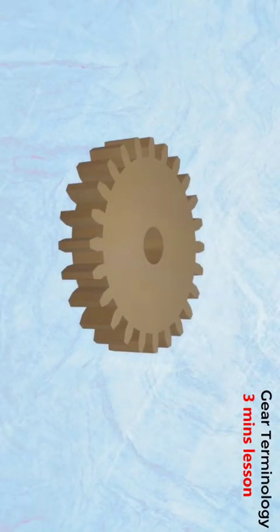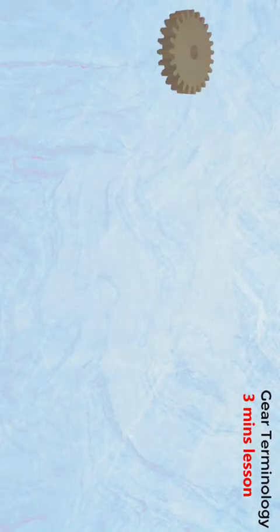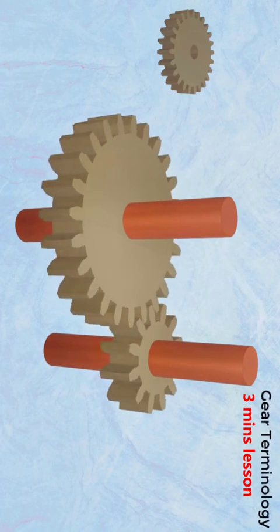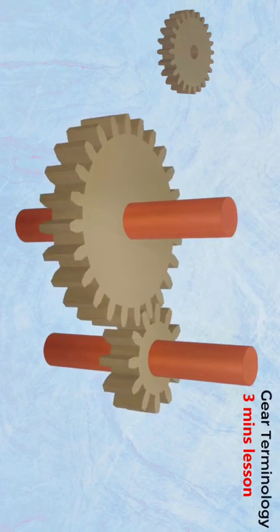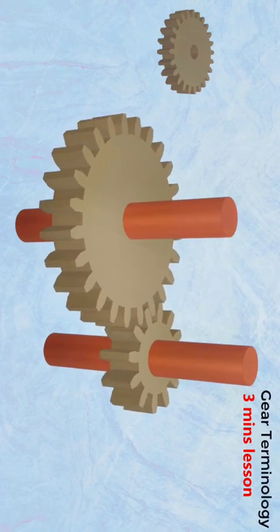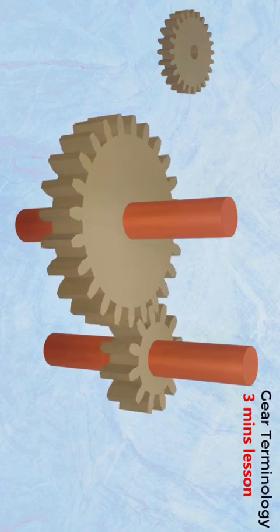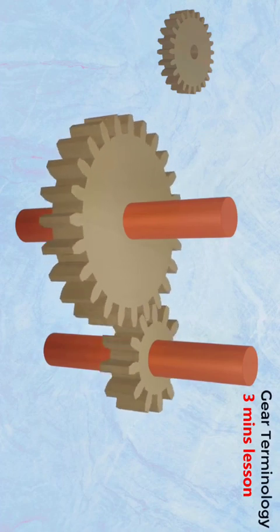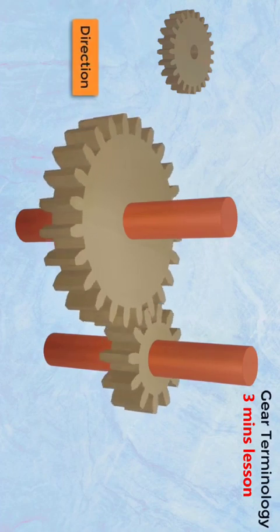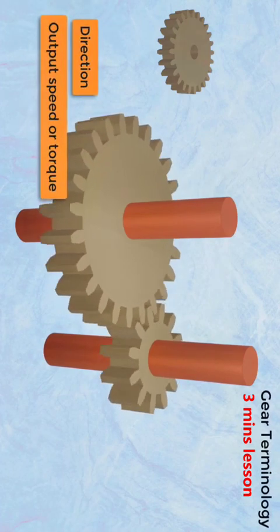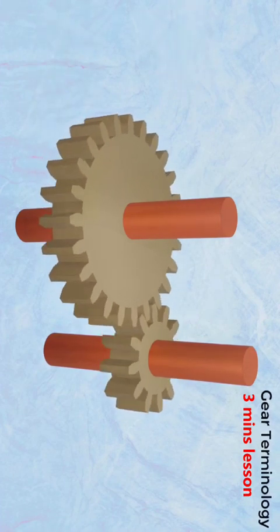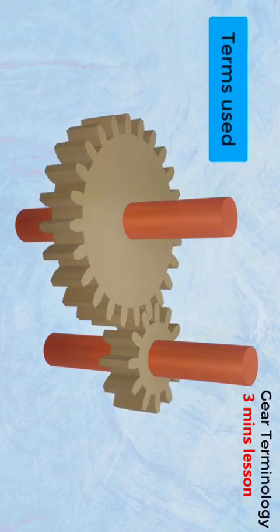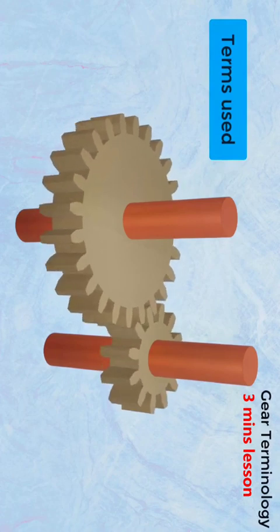Gear terminology. A gear is a machine element that meshes with other gears to transmit power from one shaft to another. Gears are used to transfer motion and torque between machine elements. Depending on the construction, gears can change the direction of movement, or increase the output speed or torque. In this video, we will understand the terms used to represent different parameters of a gear.